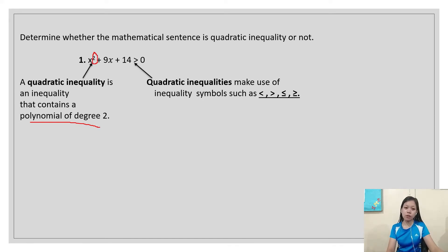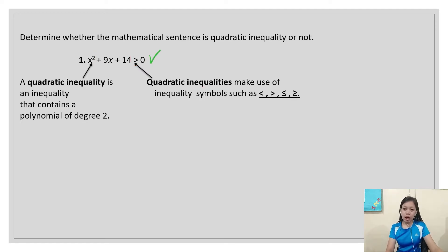So let's find out if it is a quadratic inequality. Quadratic inequalities make use of inequality symbols such as less than, greater than, less than or equal, or greater than or equal. Since the symbol is greater than, this equation is a quadratic inequality.